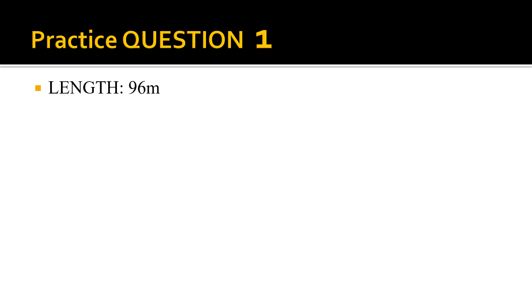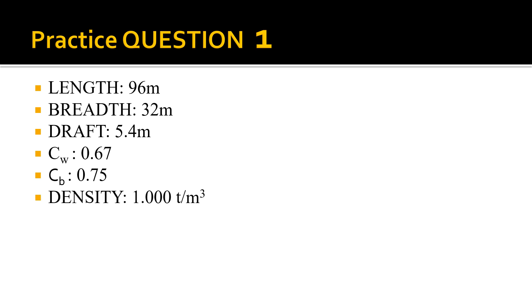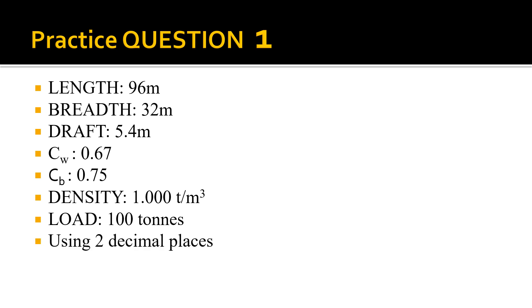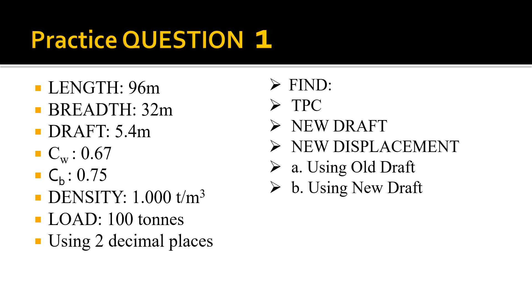Question 1: we have length 96, breadth 32, draft 5.4, CW 0.67, CB 0.75, and density 1.000 — fresh water. The vessel is loading 100 tons of cargo. We will be using two decimal places in all calculations. We are asked to find TPC, the new draft, and new displacement using both the old draft and the new draft method.